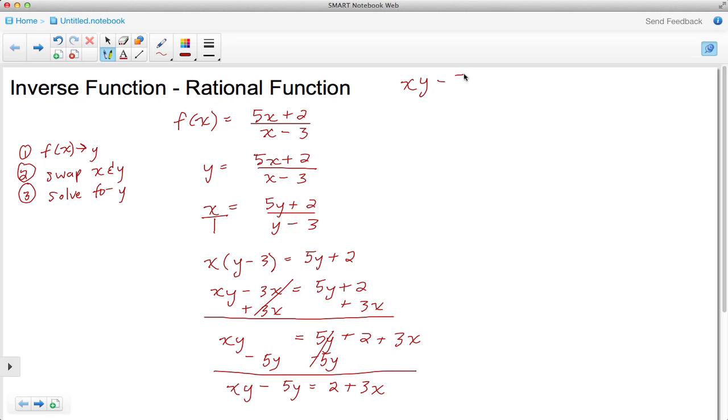So xy minus 5y is equal to 2 plus 3x. Here I've got a common factor of y so let's factor out a y. So I'm left with y times the quantity x minus 5 is equal to 2 plus 3x and now I can get this y by itself by dividing by the quantity x minus 5.